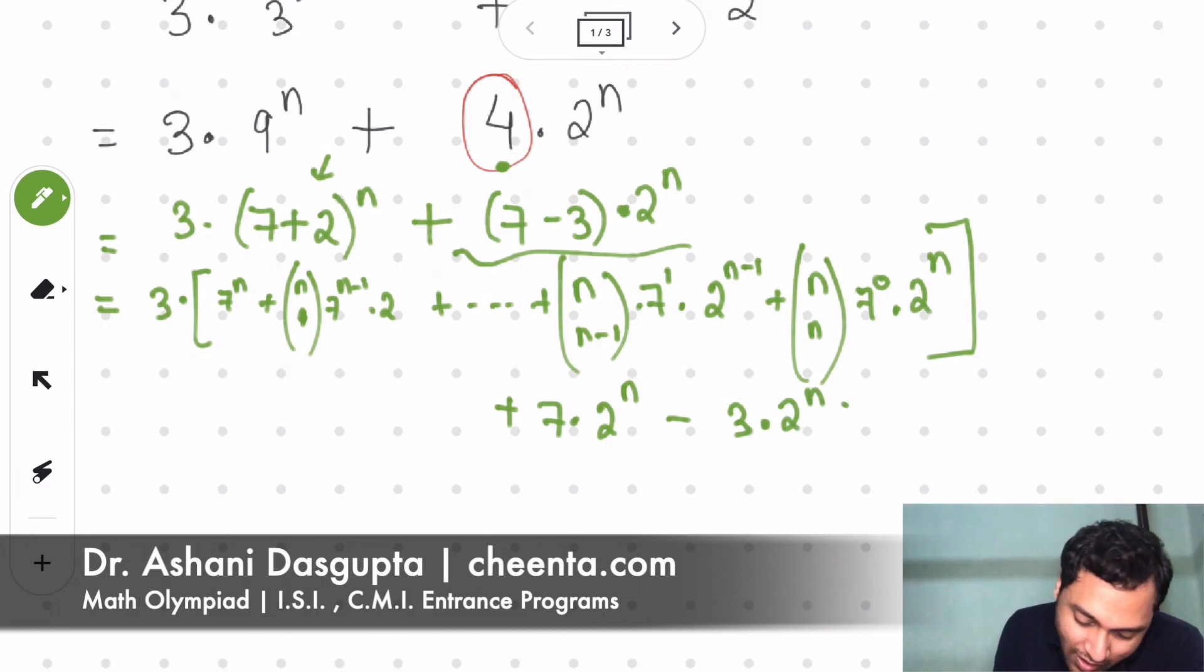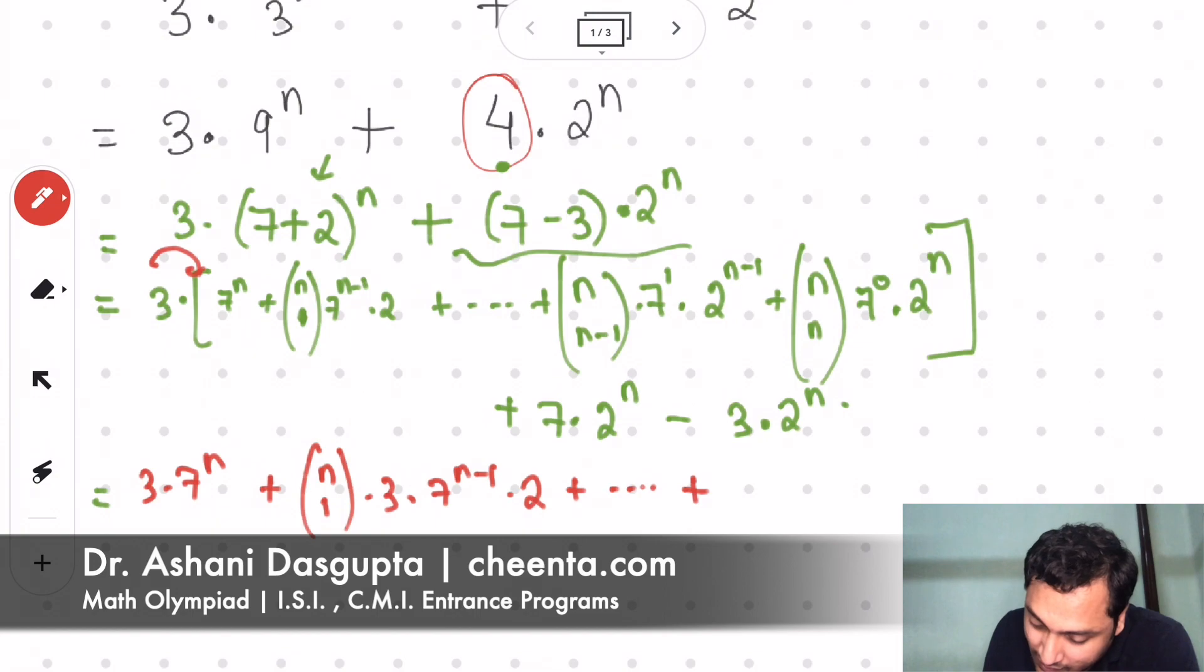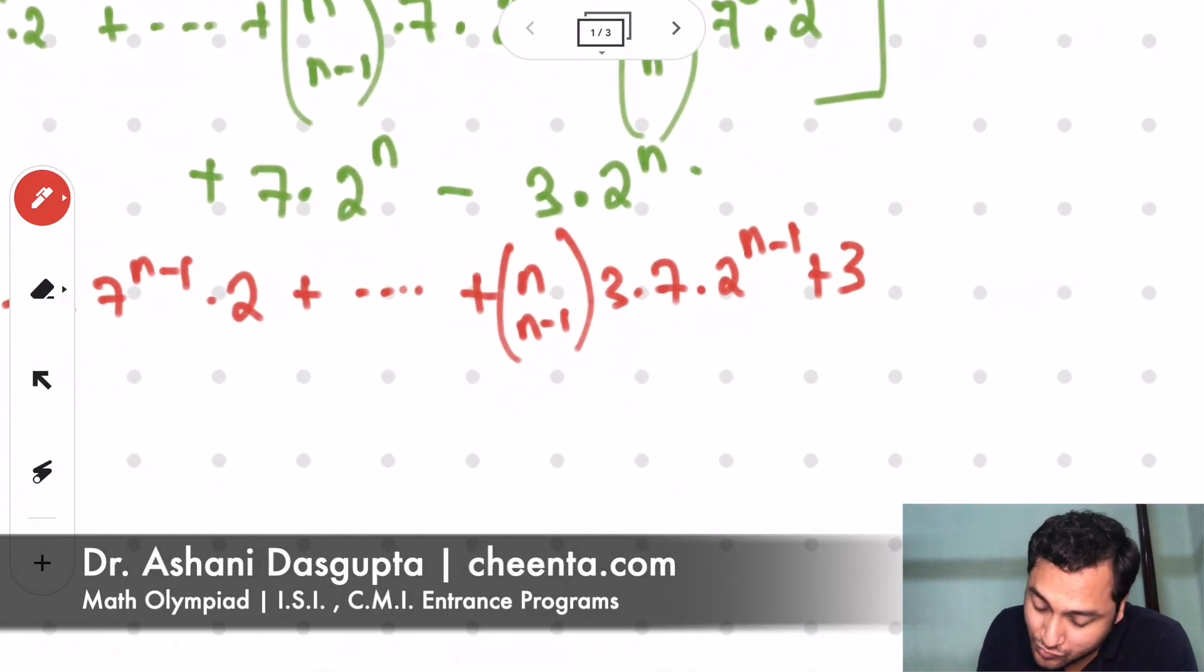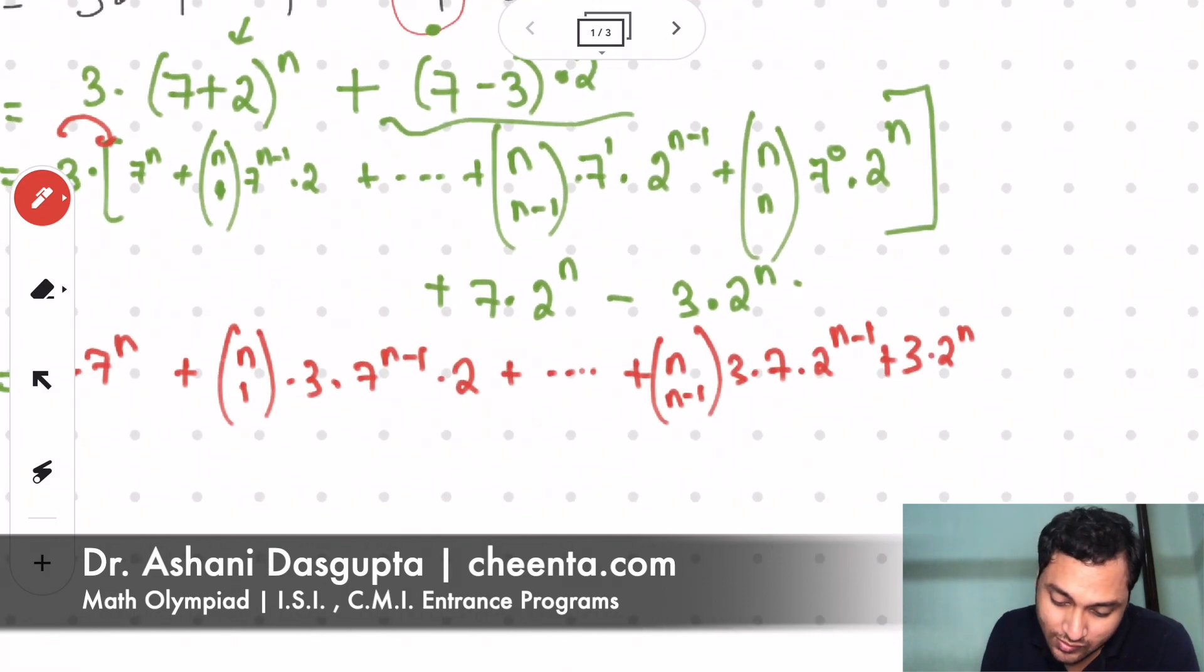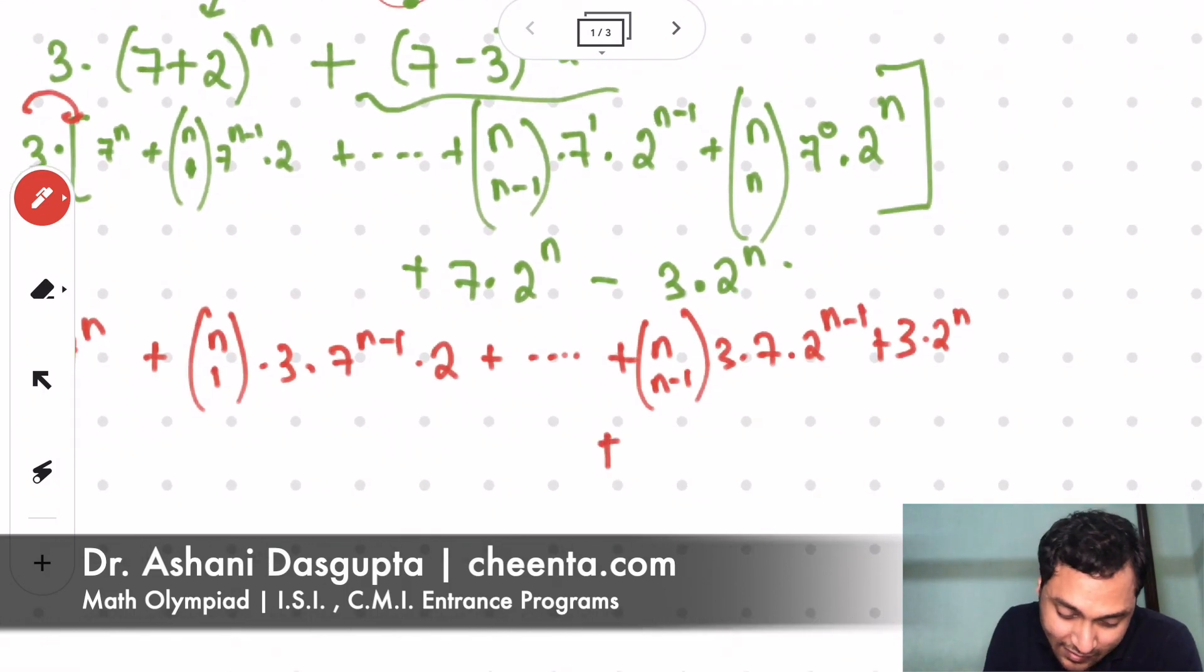So now I will open this bracket, open the parentheses right here. This will give me 3 times 7 to the power n plus n choose 1 times 3 times 7 to the power n minus 1 times 2, up to the last one, n choose n minus 1 times 3 times 7 times 2 to the power n. And I also have plus 7 times 2 to the power n minus 3 times 2 to the power n. So these two cancel off. Good thing.